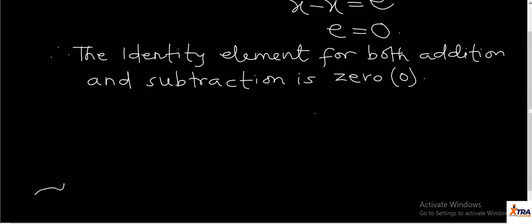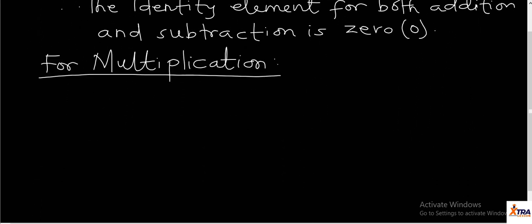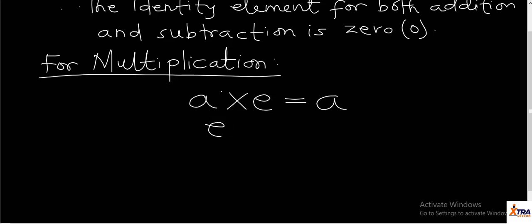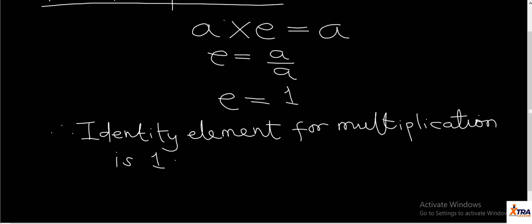Let's look at the identity element for multiplication. For multiplication, we take a particular A, relating it by the multiplication symbol to the identity element E, and it must give us back A. In order to get A, we find that E equals A divided by A, which means our identity element for multiplication is one. So that is the identity element for multiplication, addition, and subtraction.